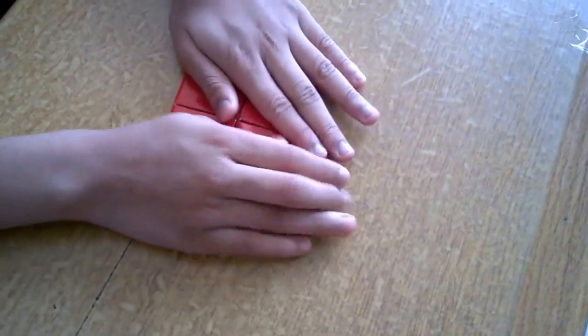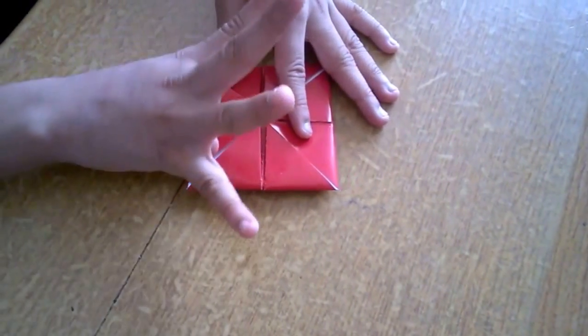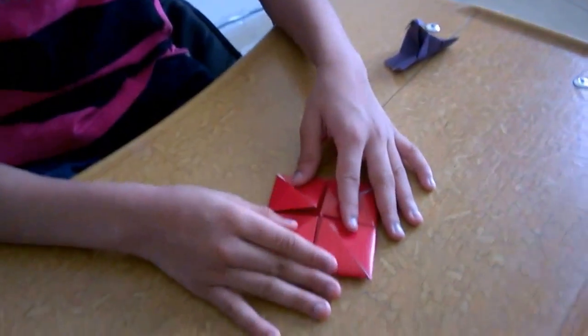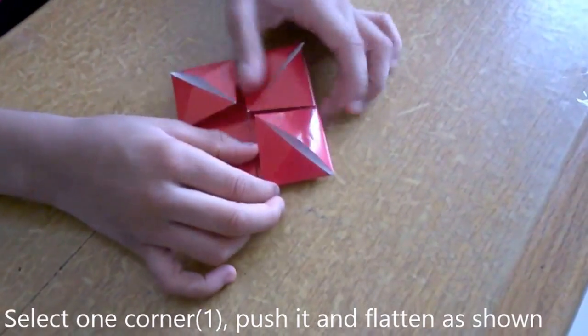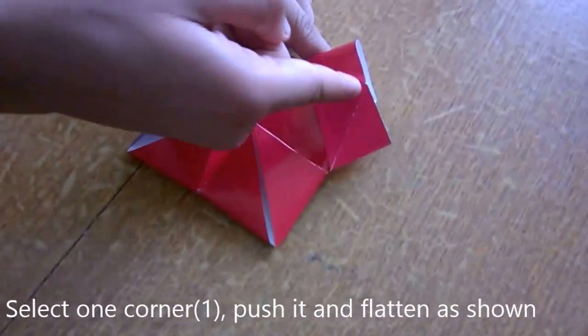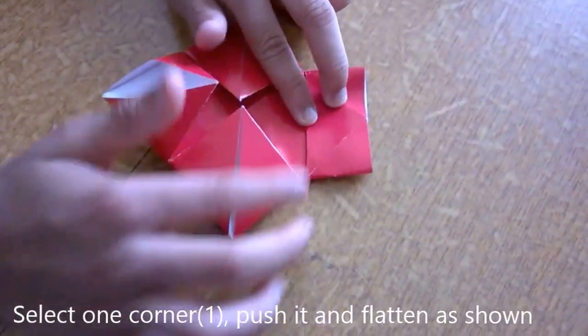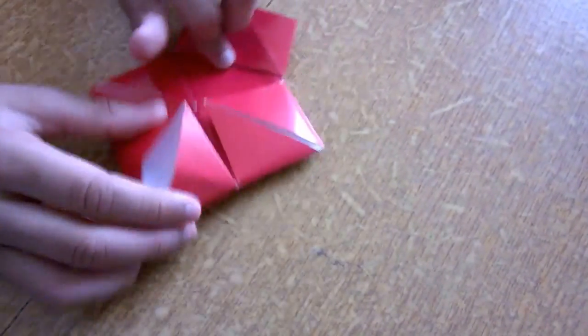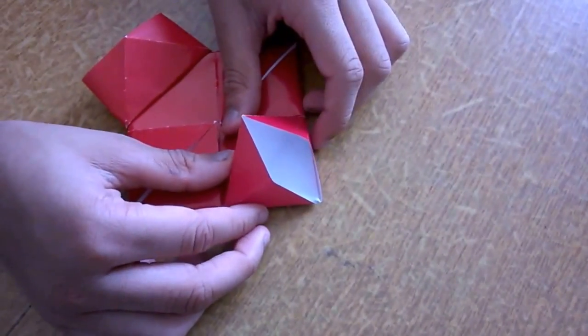Flip it over. Now you see four diamonds. So you take one diamond and just push on the ends and flatten it to get a triangle. Do it to the other side also.